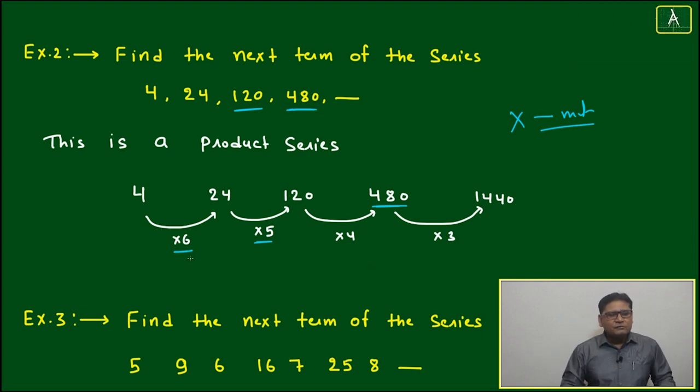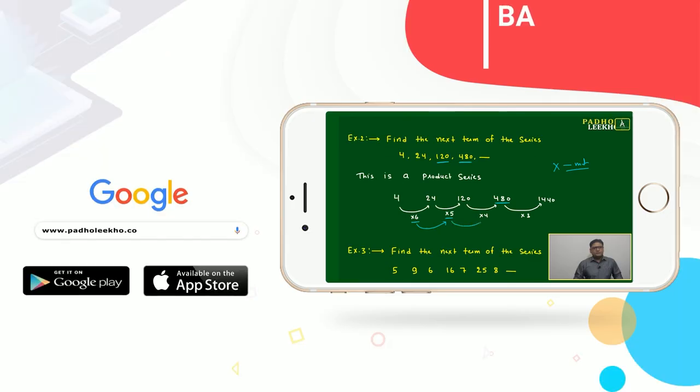What's happening here? The first term is multiplied by 6, then 5, then 4, then 3. So 480 multiplied by 3 gives your answer: 1440.